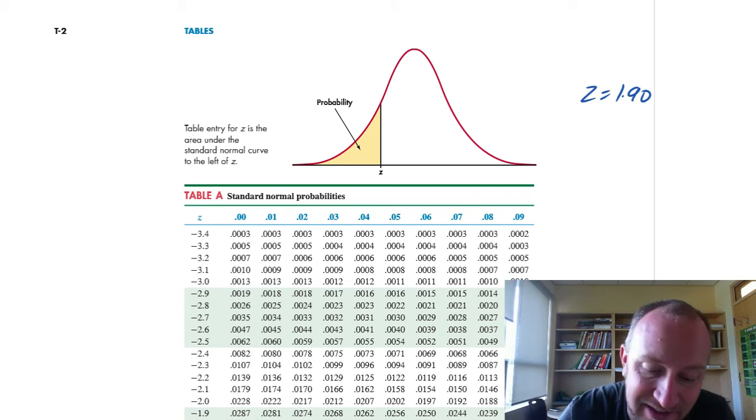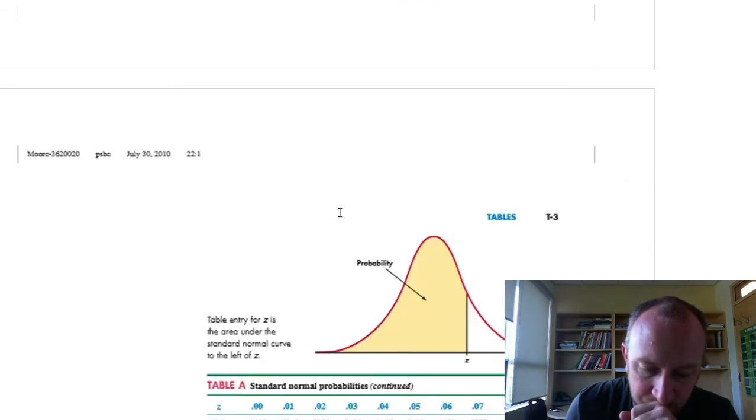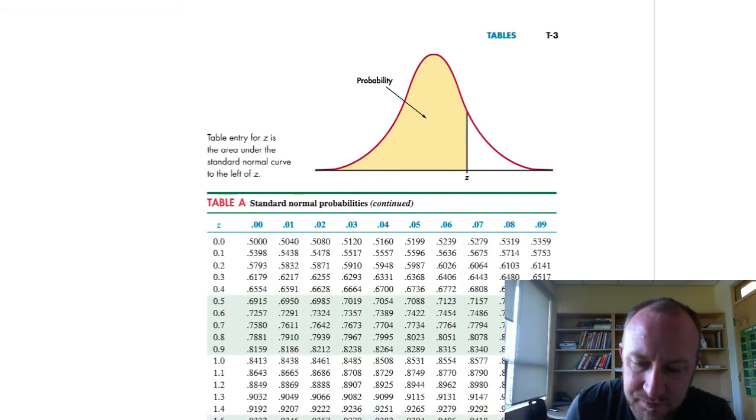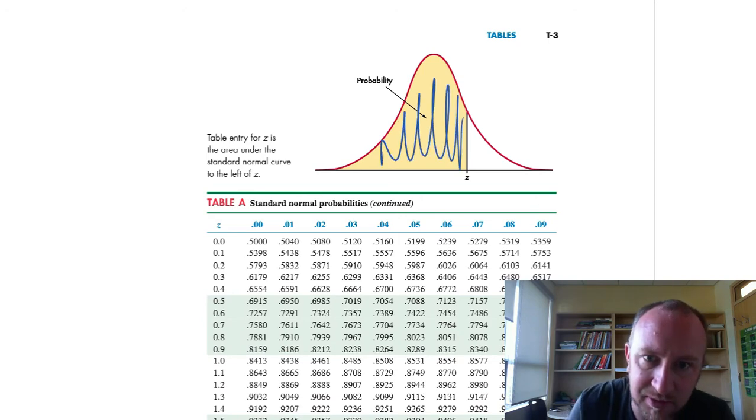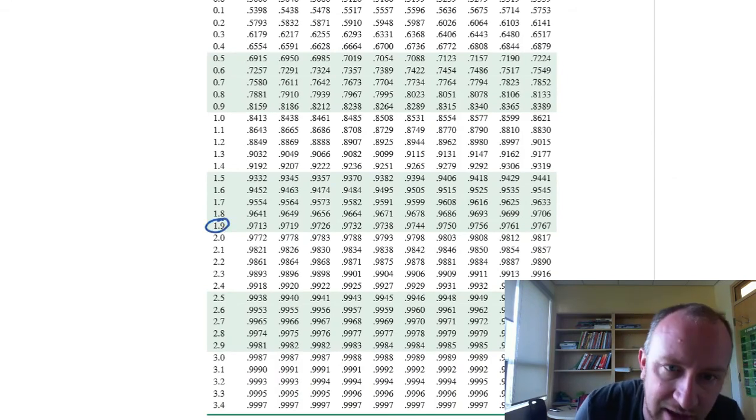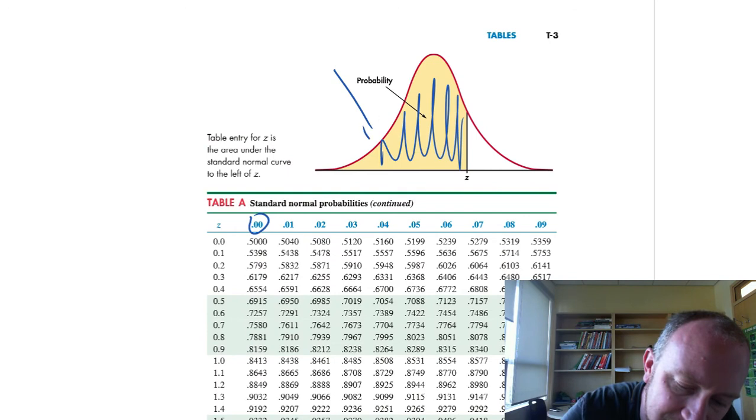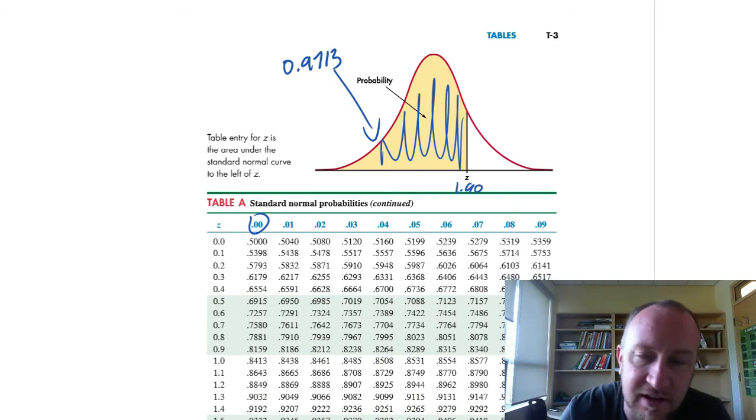Keep in mind, we've worked with these tables before. Keep in mind how they're designed. Here I've got only the lower tail probability. If I go to the positive side, same thing, I have that lower tail probability. And so if I were to look up 1.9, so there's 1.90, that gives me a probability of 0.9713. So that's this whole region here, 0.9713, that corresponds with the test statistic of 1.9.